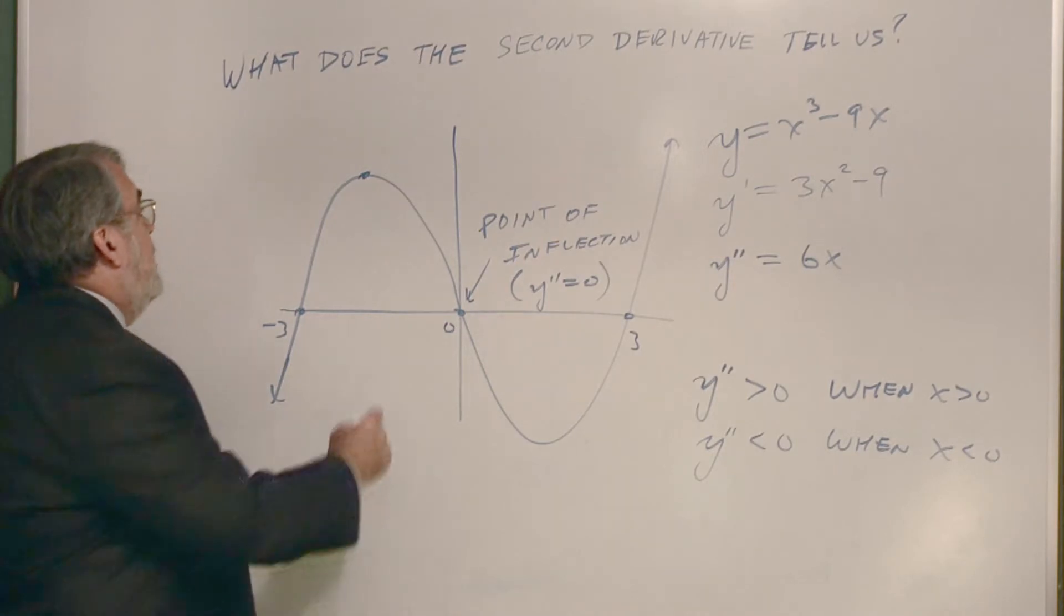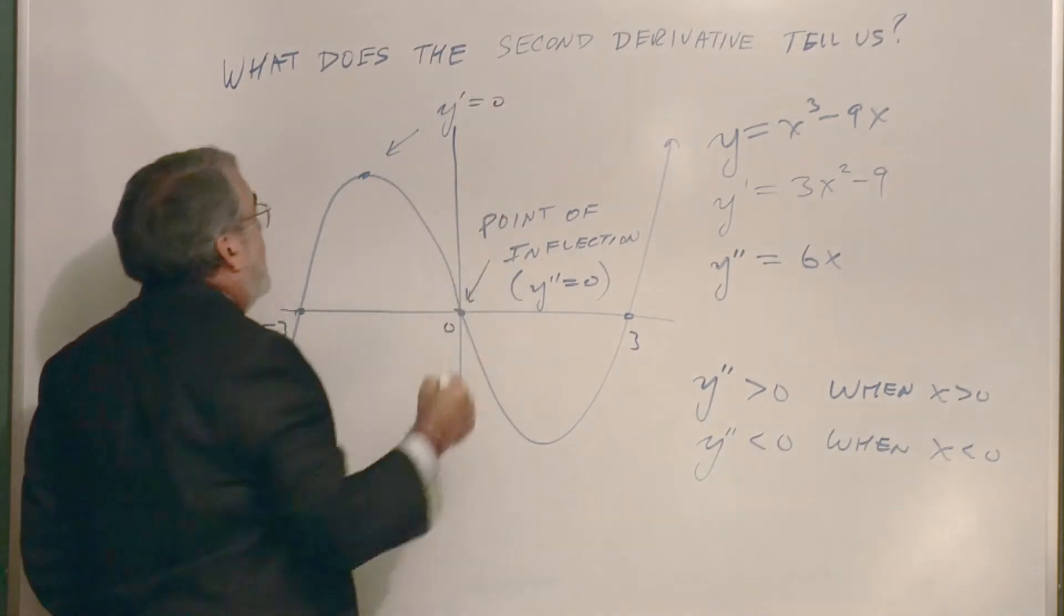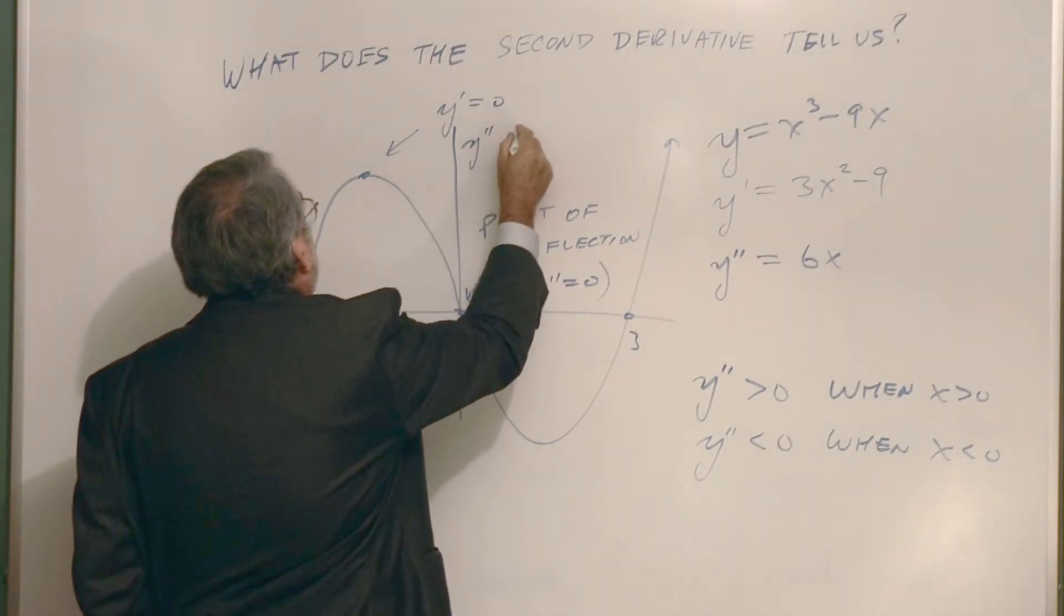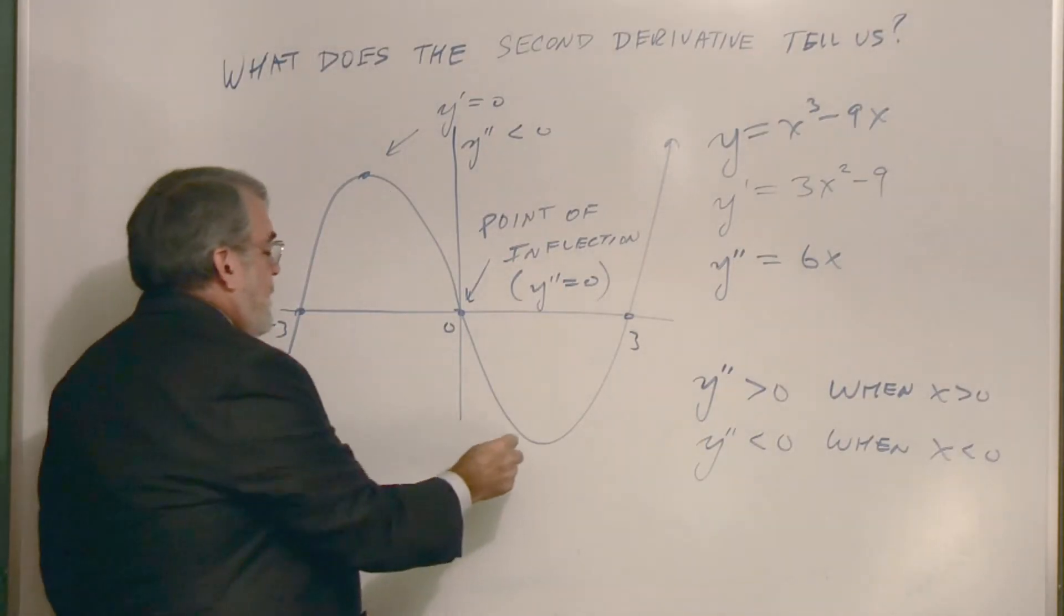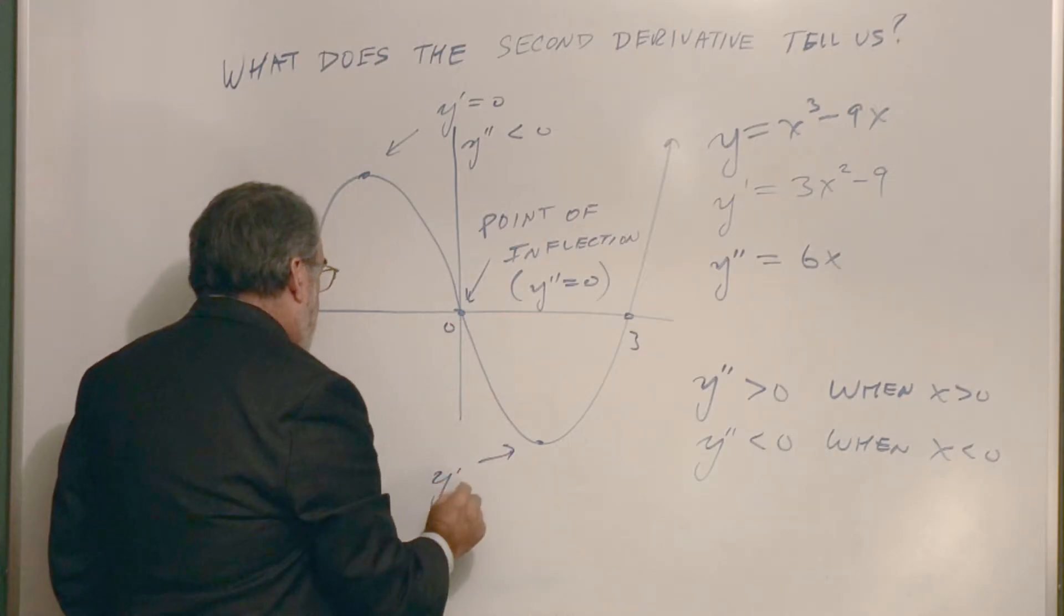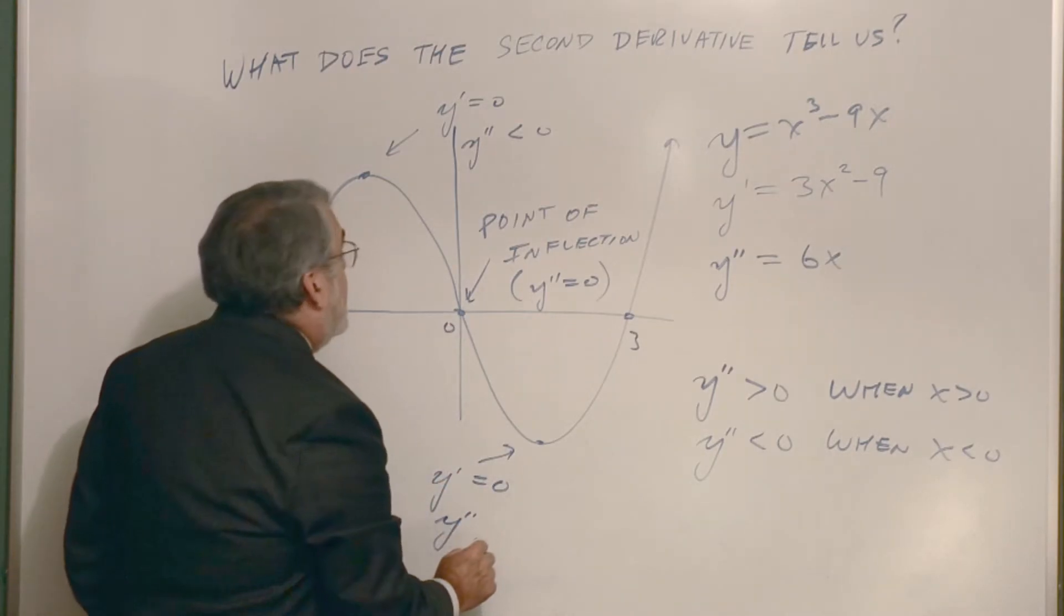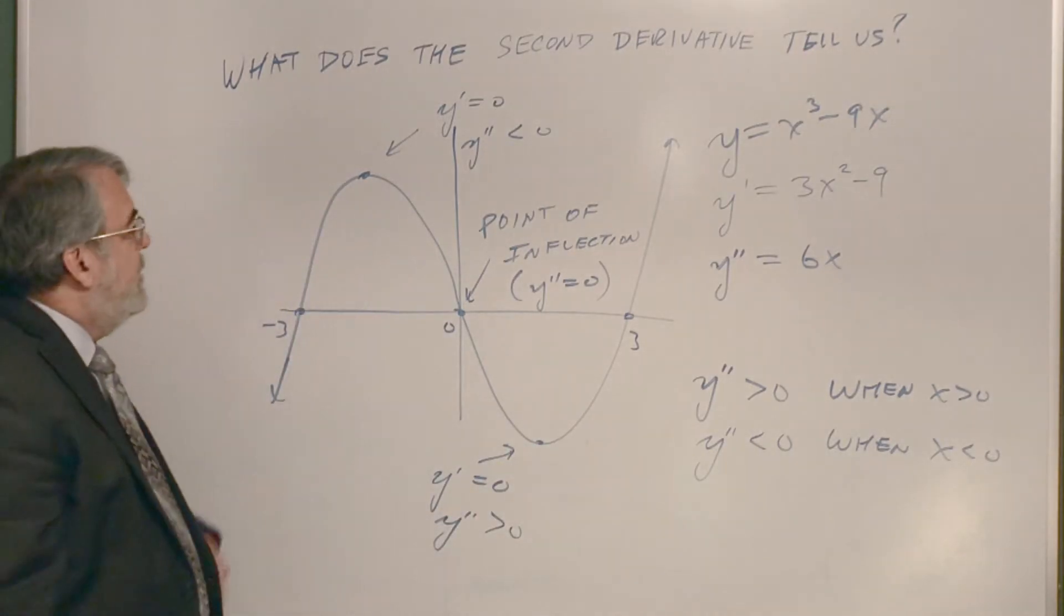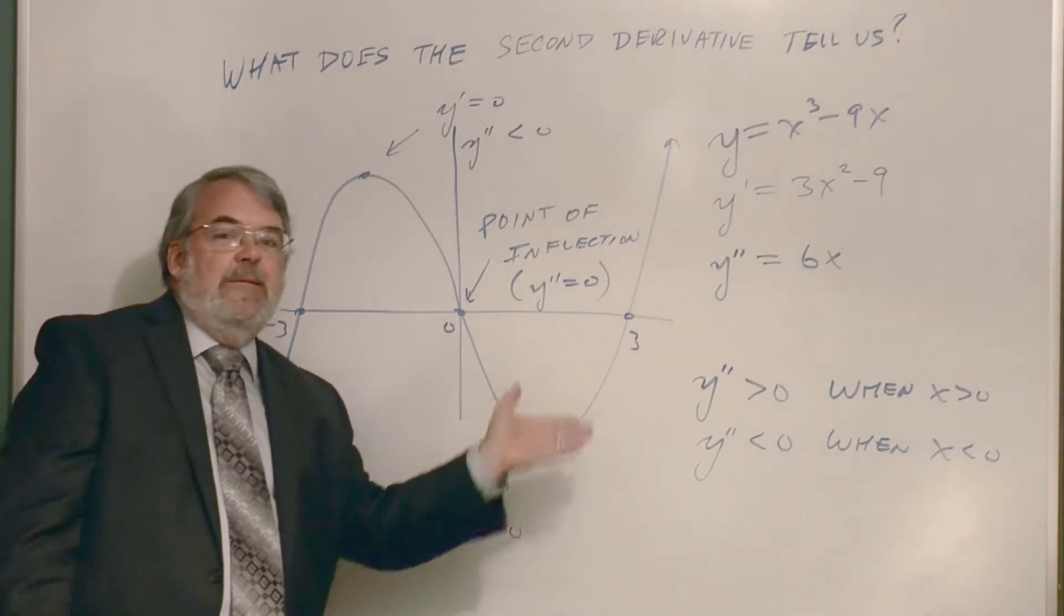where the first derivative was zero, the second derivative was negative, concave down. And over here, when the first derivative was equal to zero, but the second derivative was positive, we reached a minimum. So we have a maximum, concave down. Here, we have a minimum, concave up. So very nice. Very nice.